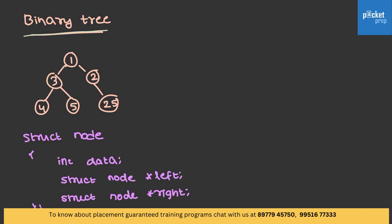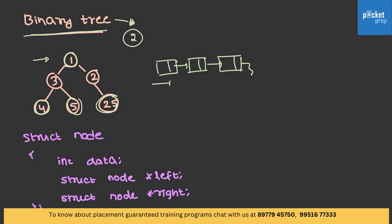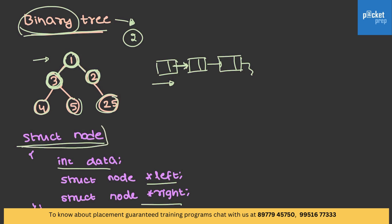Let's come back to this binary tree. We know that a binary tree can have a maximum of 2 children. Looking at this tree, 1 is the root and 4, 5, 25 are leaves. In the case of a linked list, we can traverse only in one direction and each node is connected to only one node. But in the case of a binary tree, each node is connected to one or two nodes — one on the left side and one on the right side. I can define a node structure carrying integer data, with a left node and right node as well. Since left and right nodes are similar to the main node, I give them the same structure.